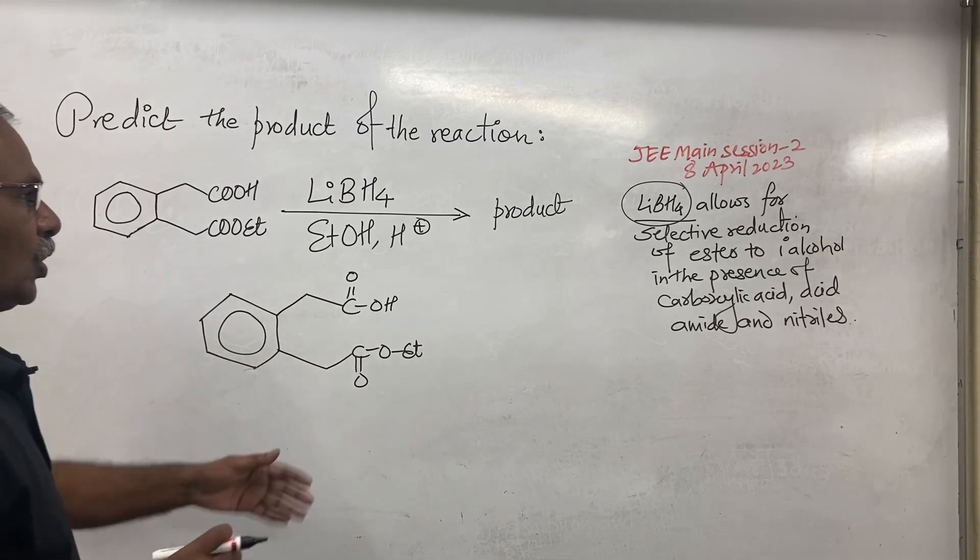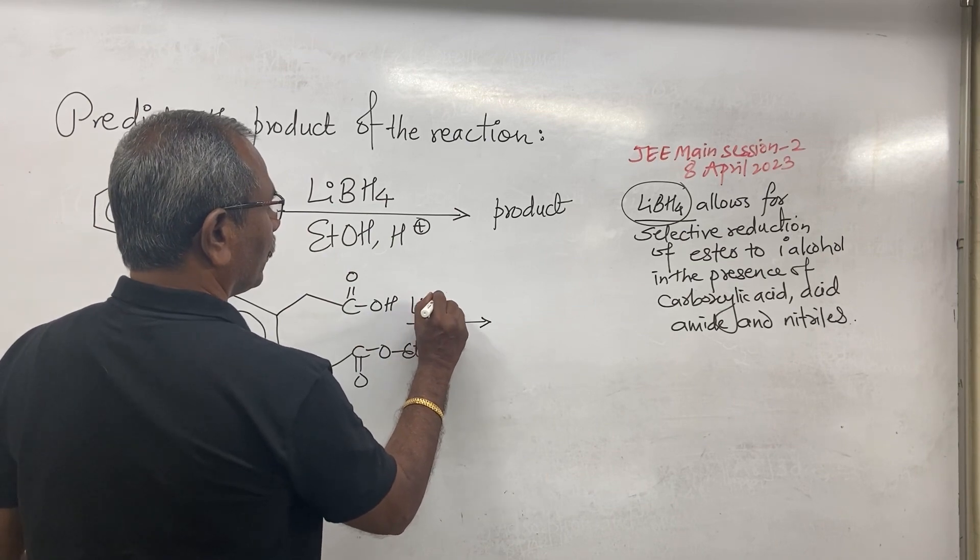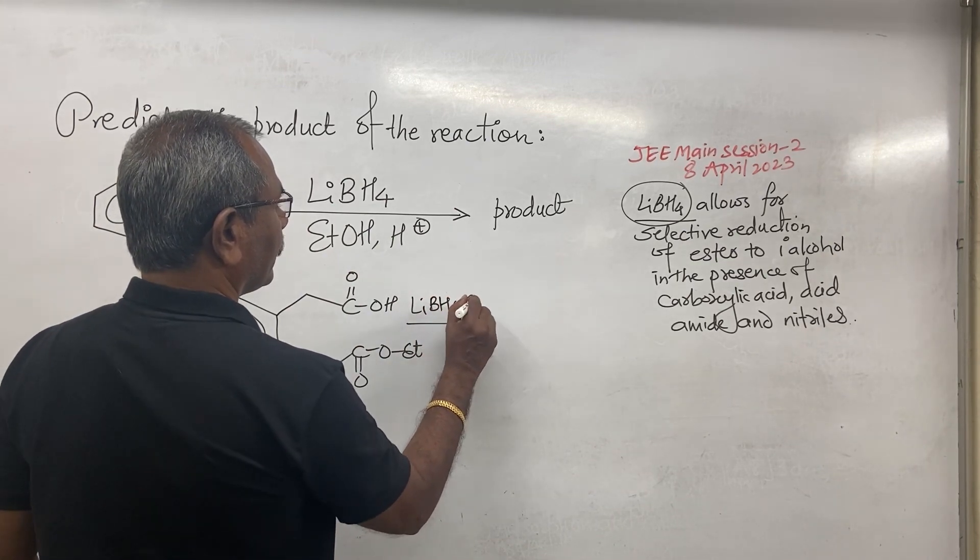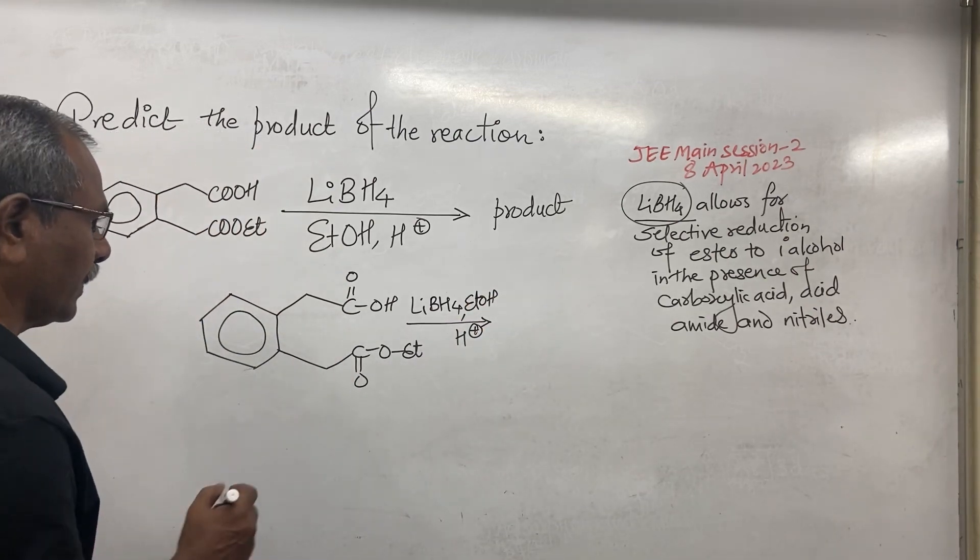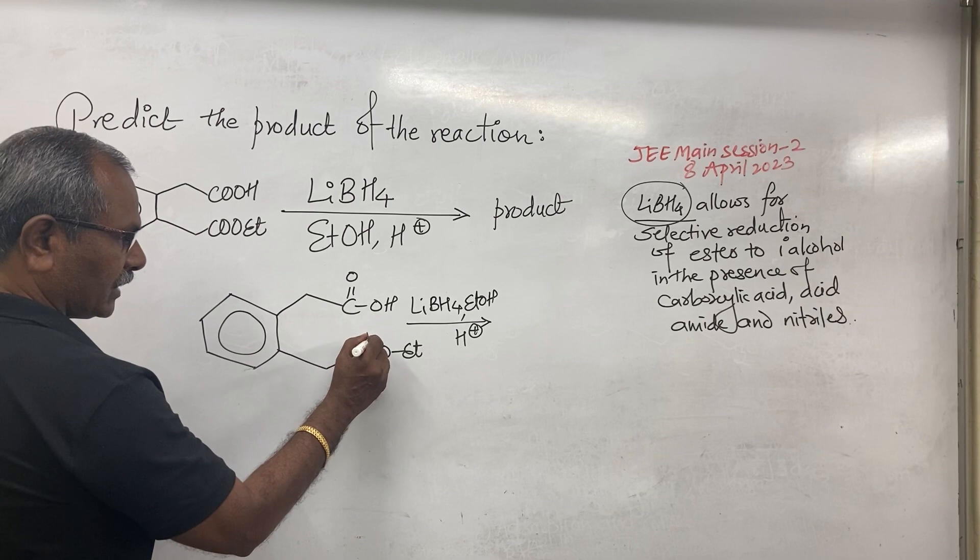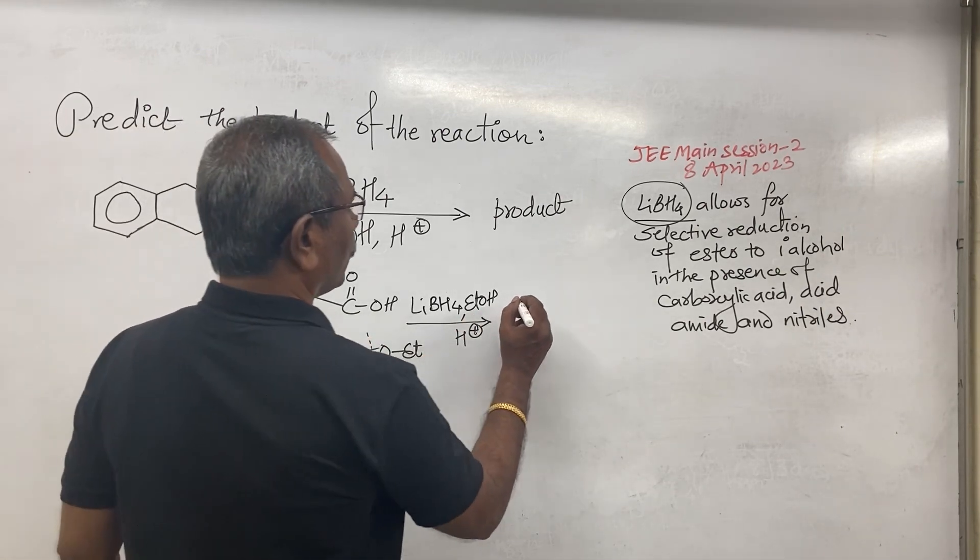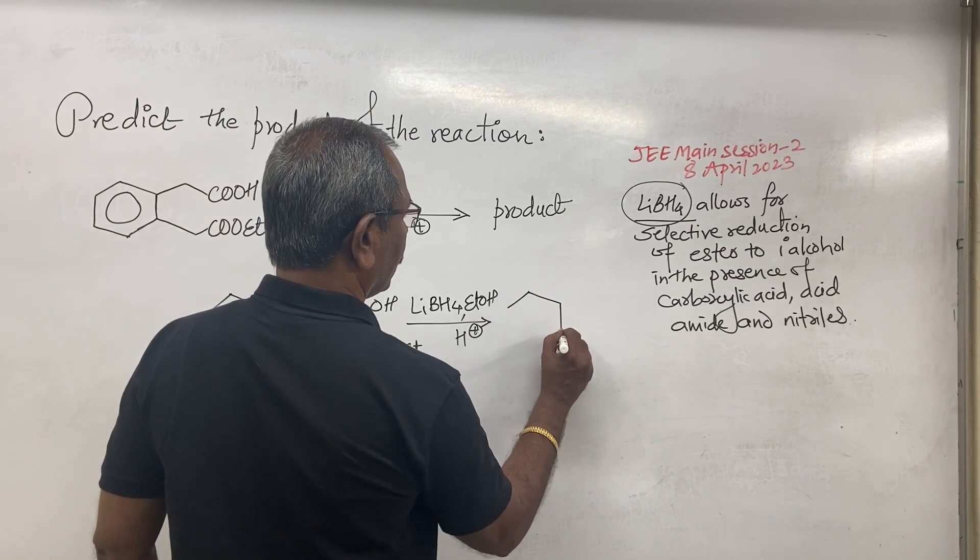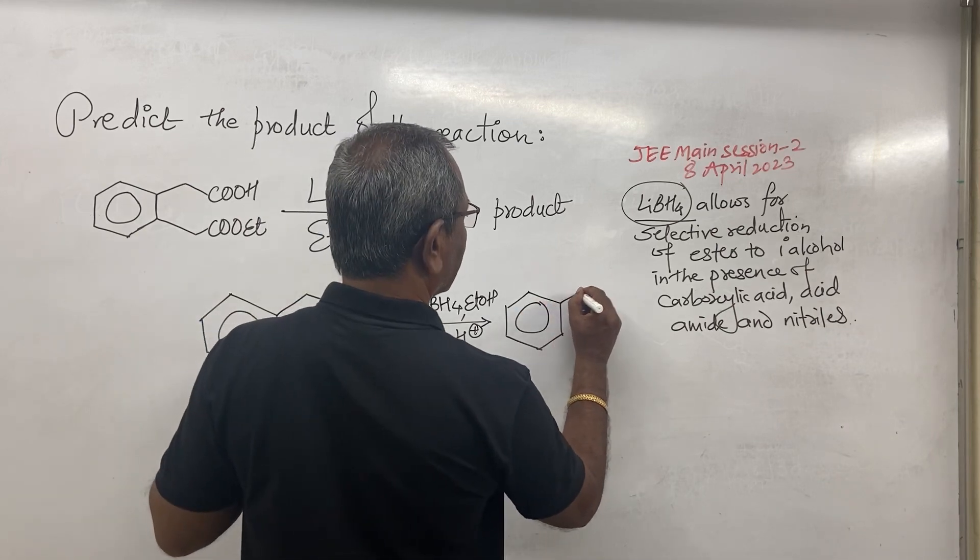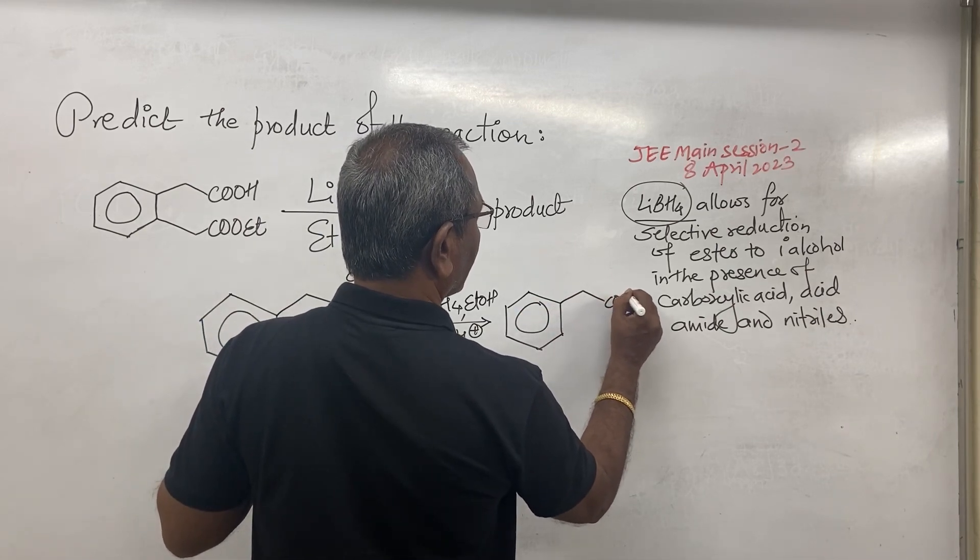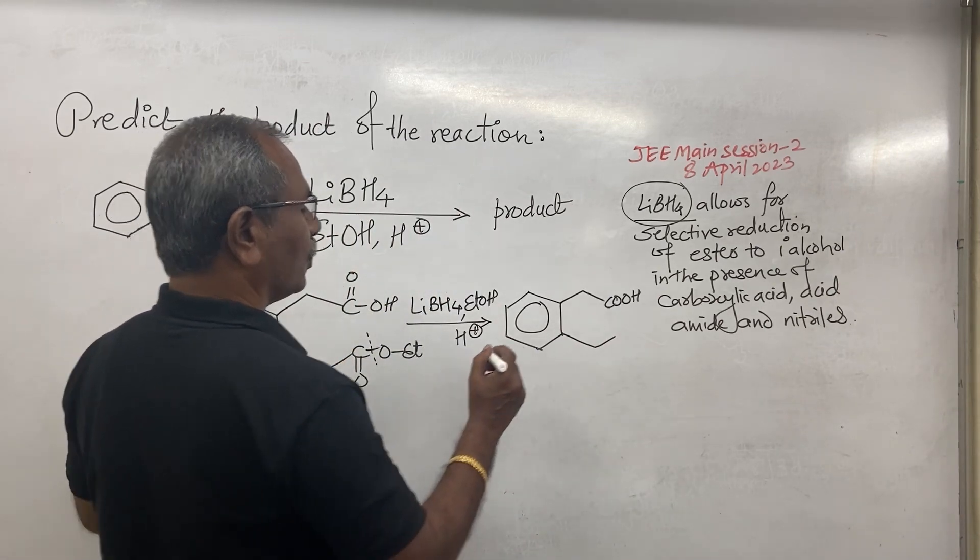So in the presence of lithium borohydride, ethanol, and H+ ion, that is hydrolysis, only ester group is reduced to primary alcohol group. So the product formed is: COOH group remains as it is, but here C=O group, that is the total ester group, is reduced to CH2OH group.